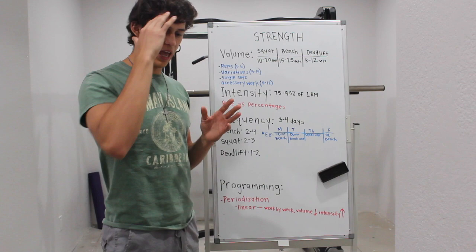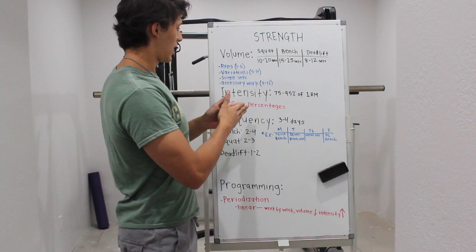RPE stands for rate of perceived exertion. Now the difference between percentages and RPE: RPE can be used more as like bumper plates as an analogy that was explained to me. It just is supposed to keep you on track.